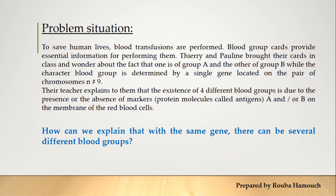I am from group O positive, so my blood group card shows that I am of group O positive. Thierry and Pauline brought their cards in class and wondered about the fact that one is of group A and the other of group B, while the character blood group — the phenotype blood group — is determined by a single gene located on chromosome 9.